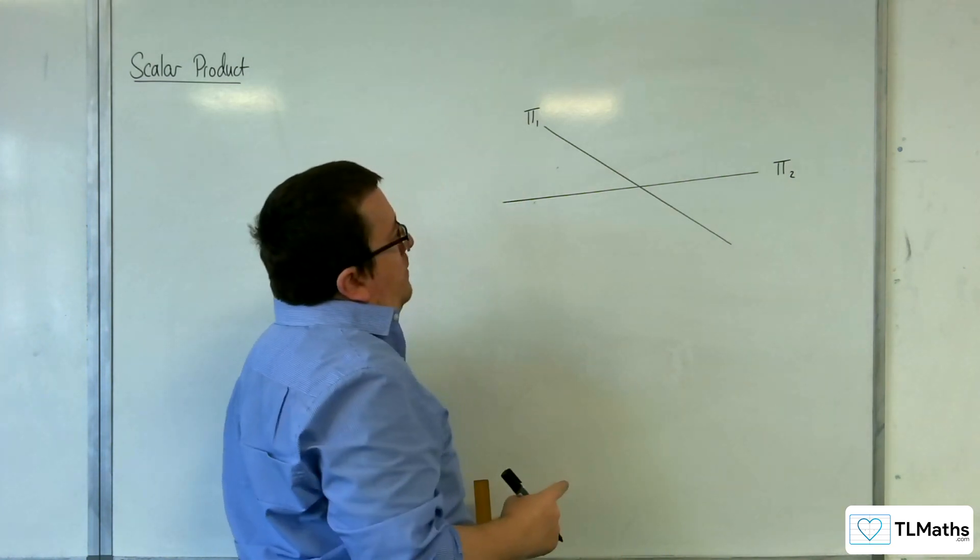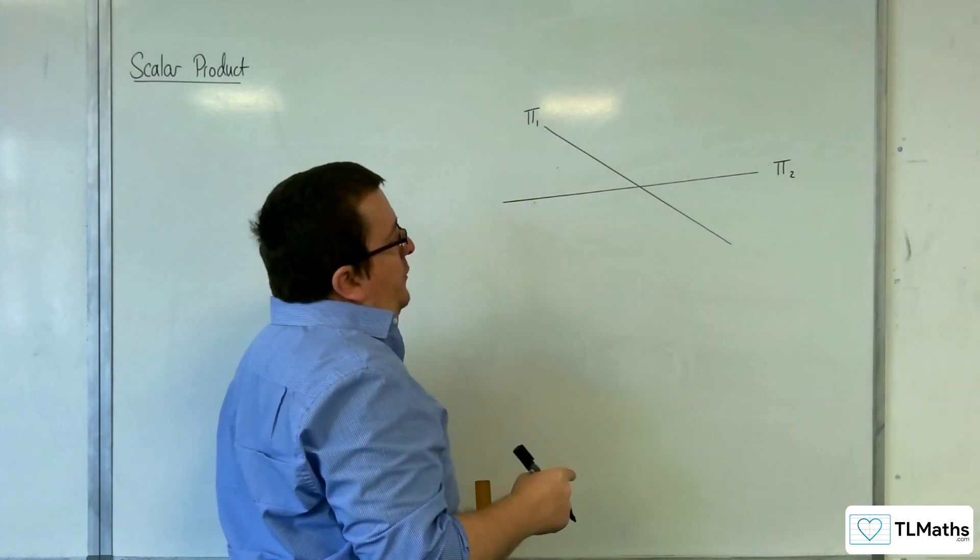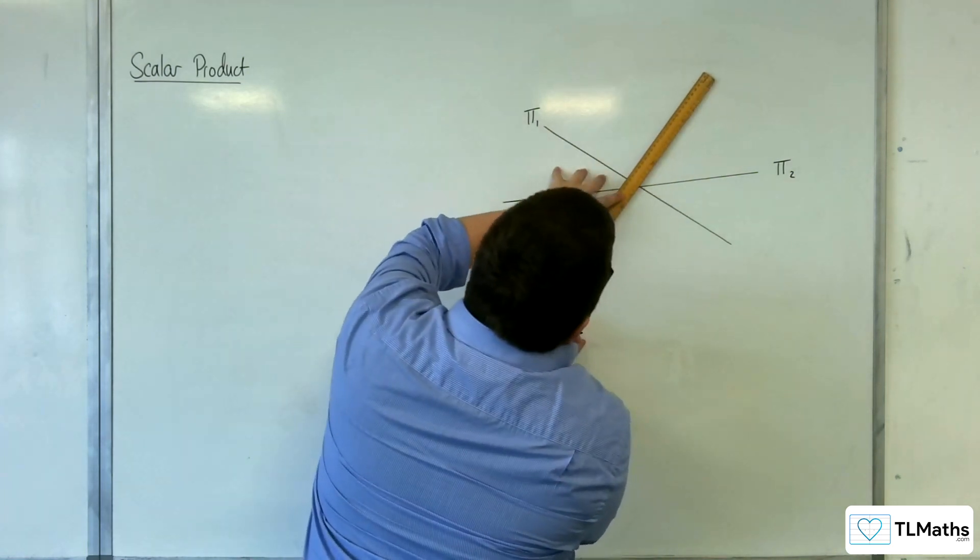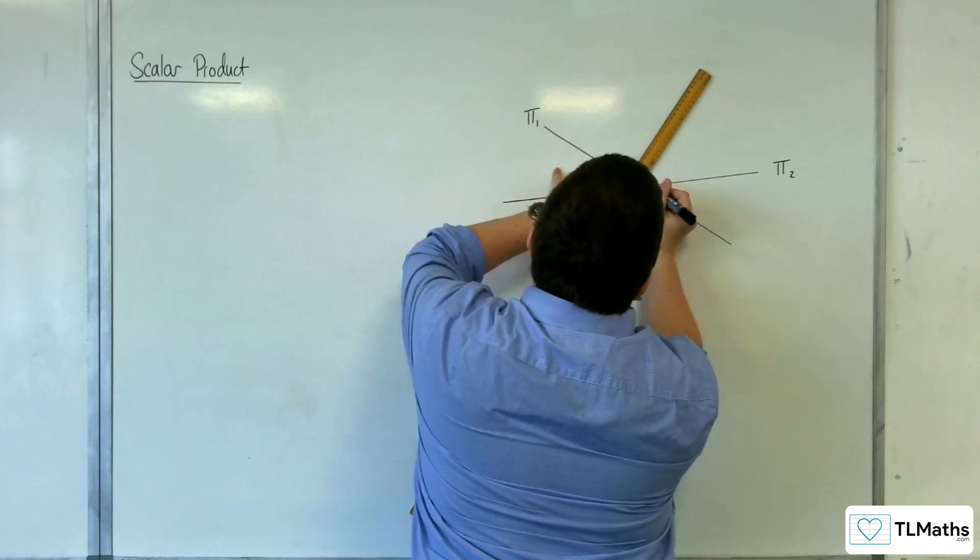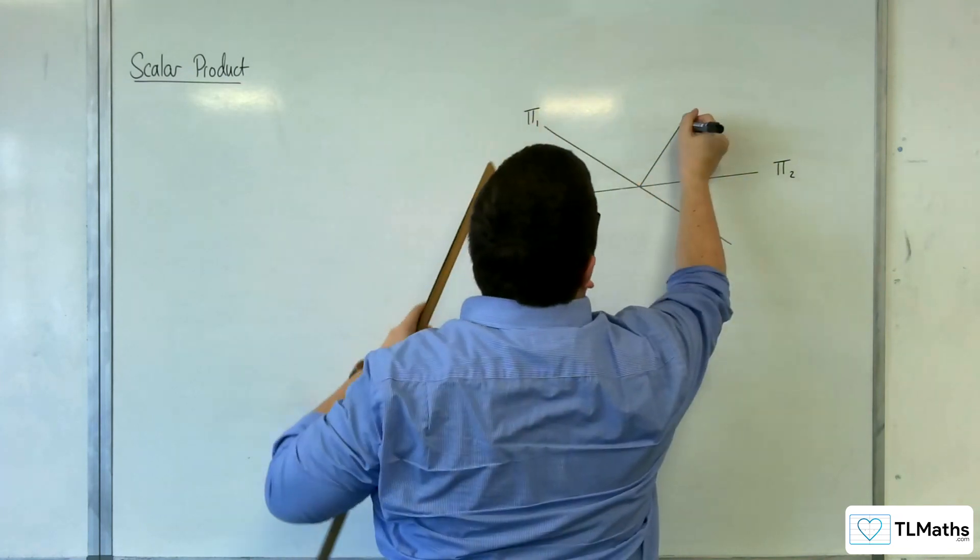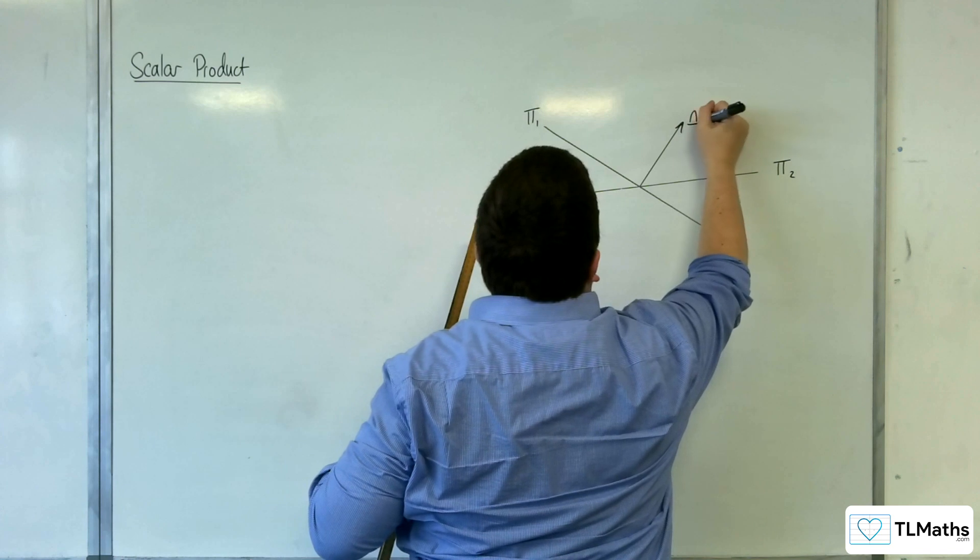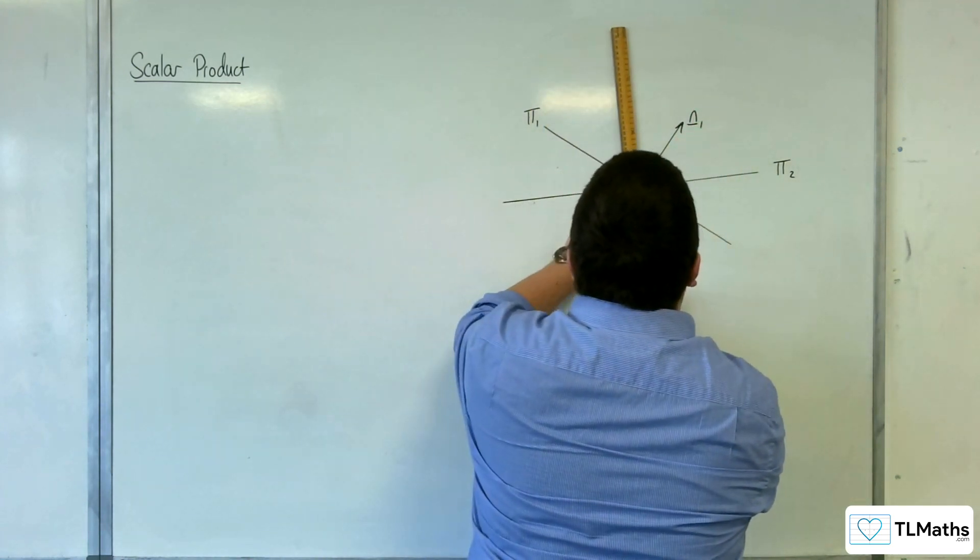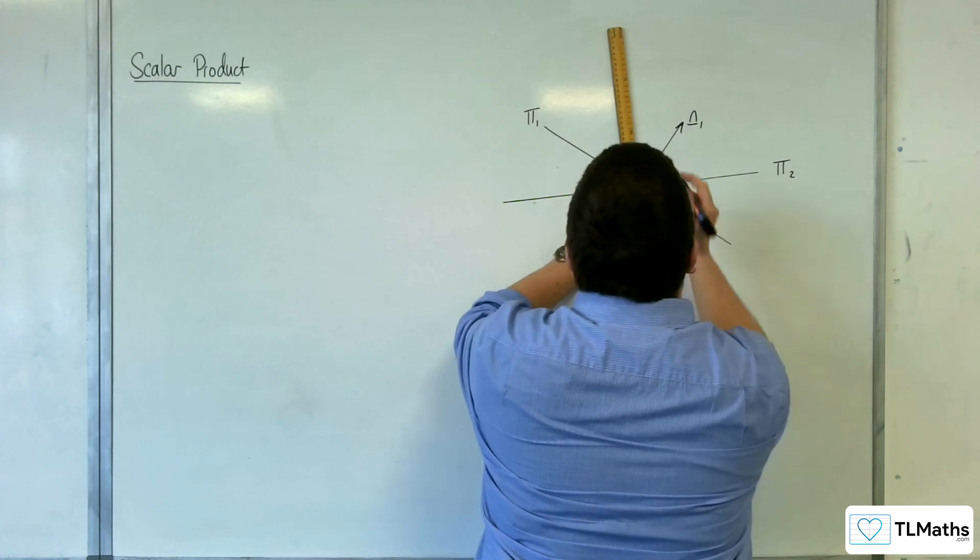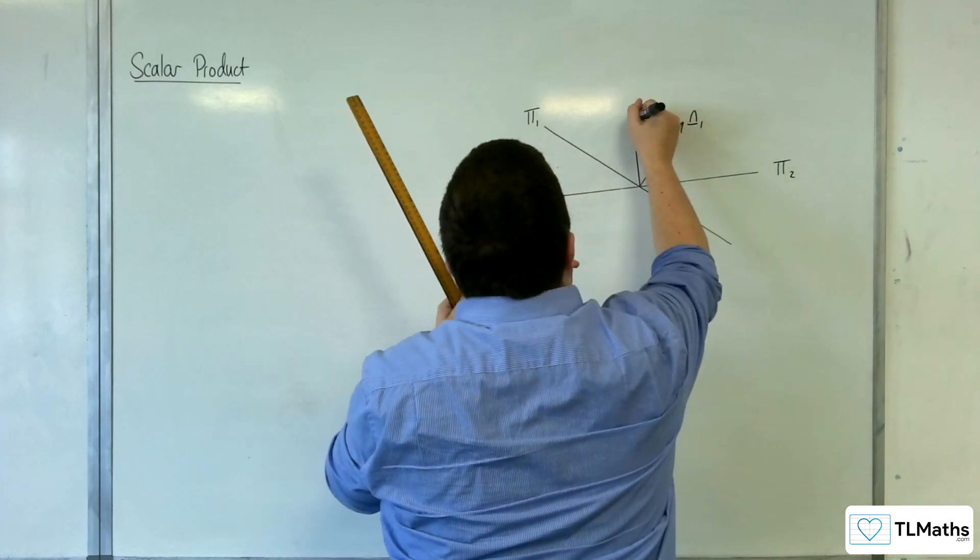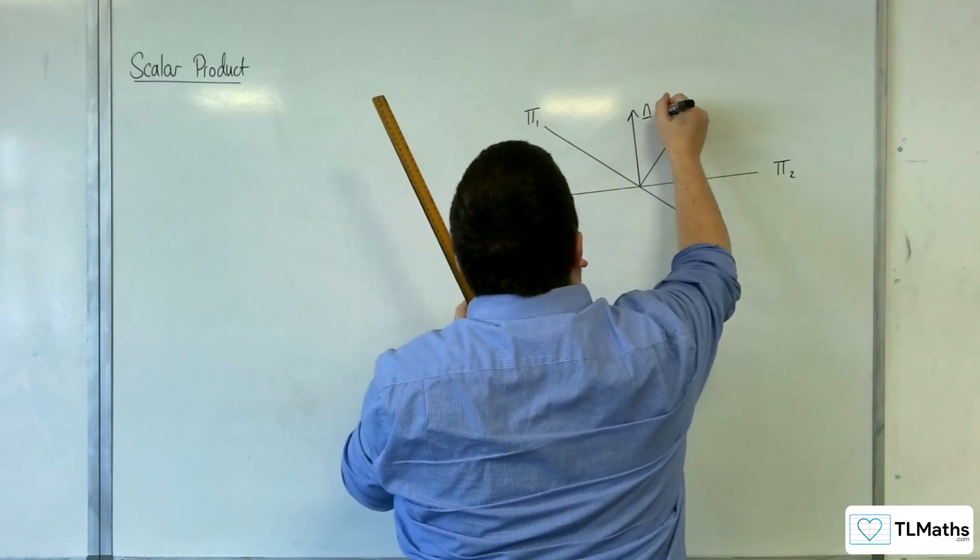So what you want to think about is the normal vectors for these two planes. Because both of them will have a normal vector. So plane 1 will have a normal vector like this. And let's call that n1. And plane 2 will have a normal vector as well. Let's call that n2.